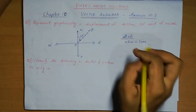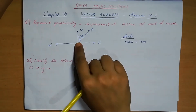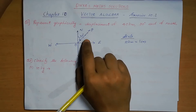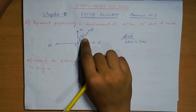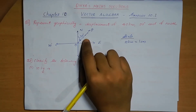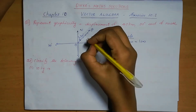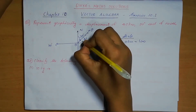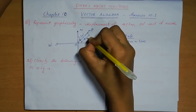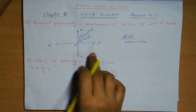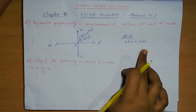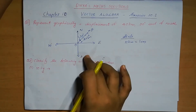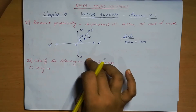So from here to here, 1 cm is 10 km. That means 10, 20, 30, 40. So this is the 40 km we can represent on this line. From here to here is the 40 km. This is the representation. Scale we need to represent: 1 cm is equal to 10 km. We need to represent the direction also.